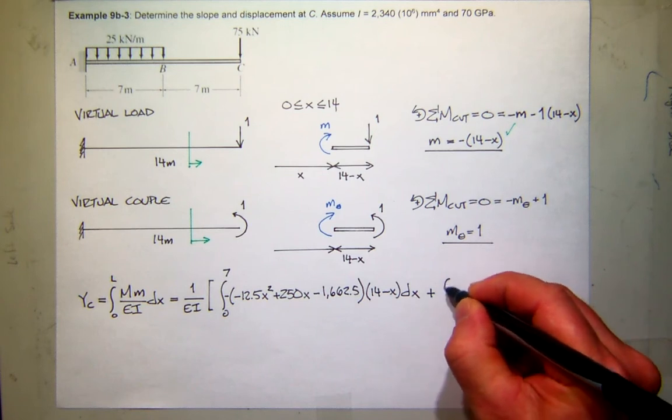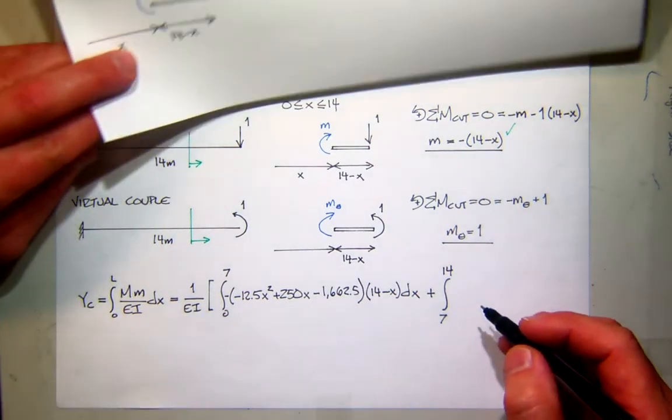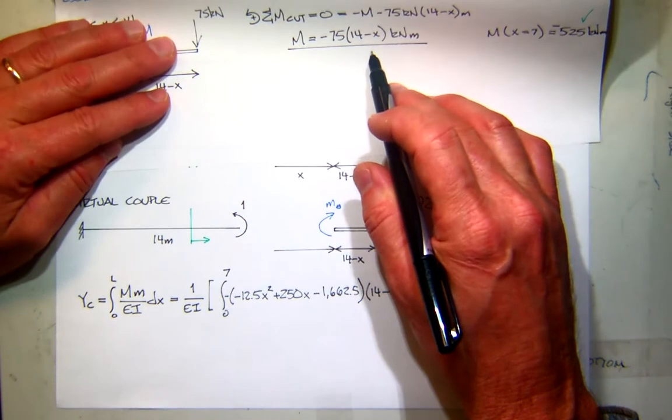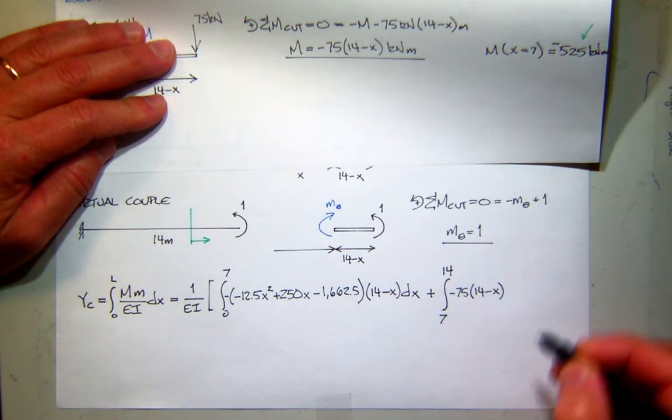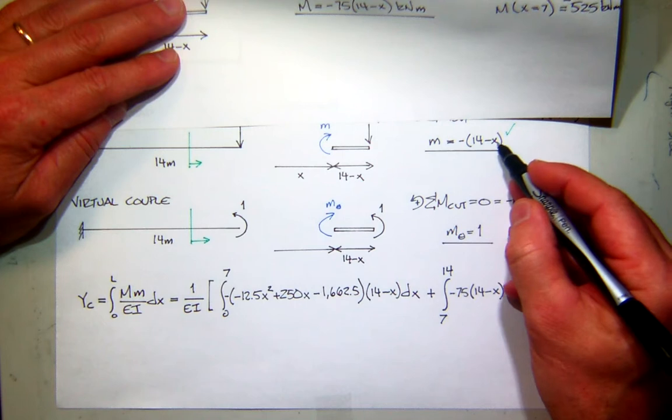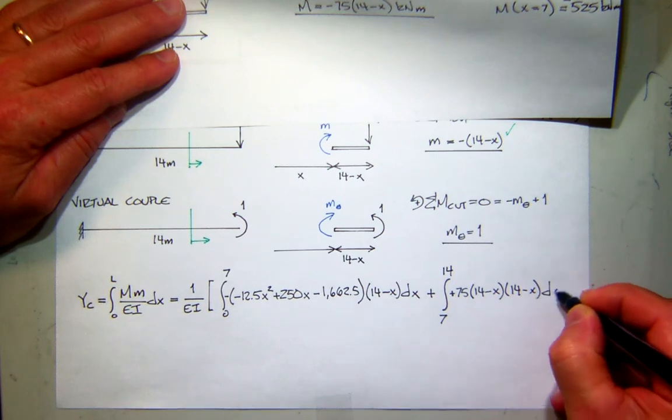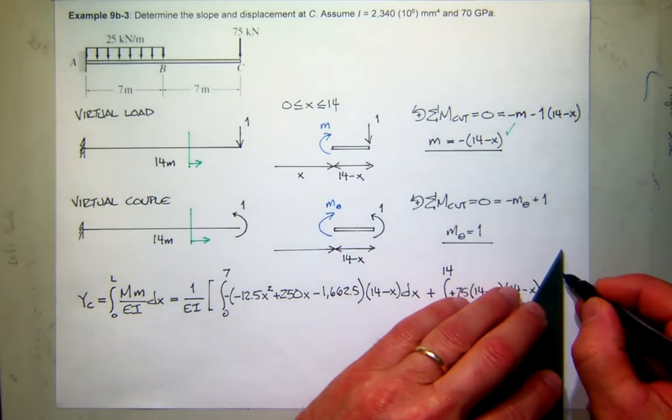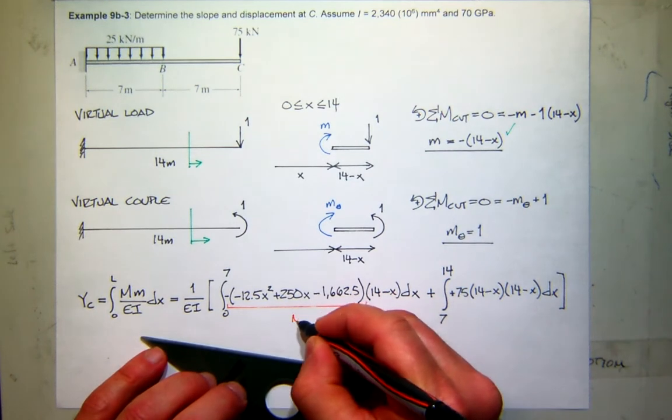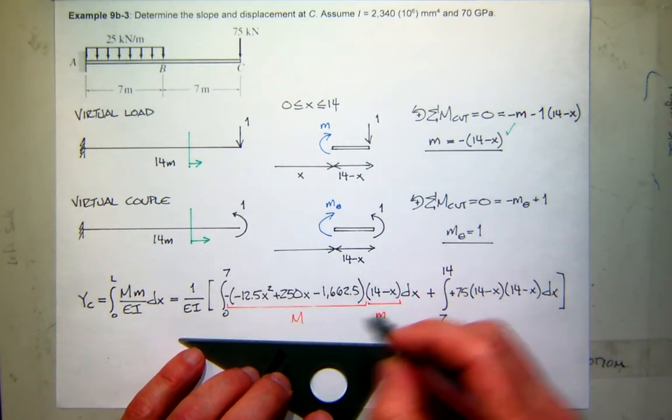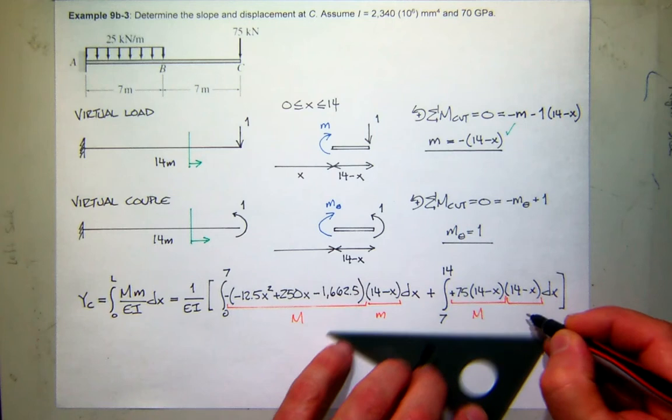So my first integral will be between 0 and 7, and the real moment is all that. So what is that going to be? That's minus 12.5x squared plus 250x minus 1,662.5. So there's my real moment, times my virtual moment, which is minus 14x, so 14 minus x, and there's a minus sign, so I'll put that up front. So again, it's the real moment times the virtual moment. Now, the second segment will go from 7 to 14, so that'll get me my whole length. So again, the real moment changes, right? It's negative 75 times 14 minus x. That's the real moment, and the virtual moment is the same, negative 14 minus x.